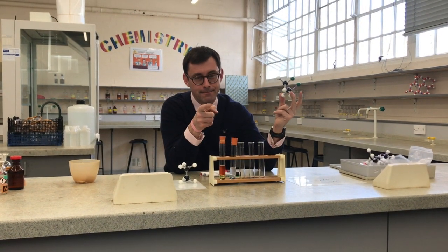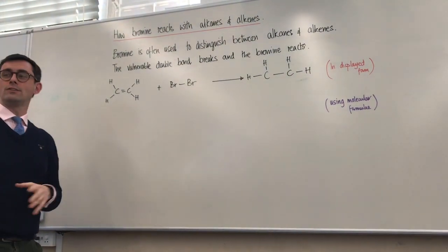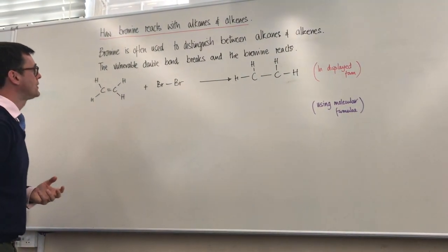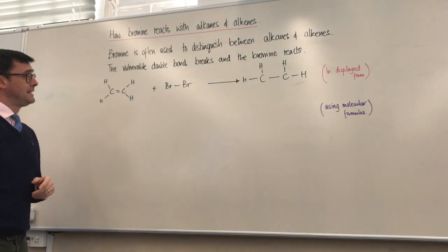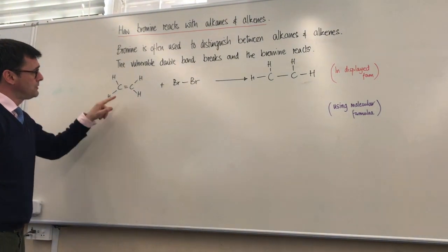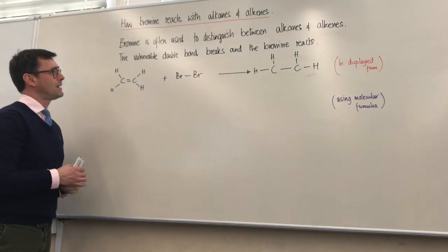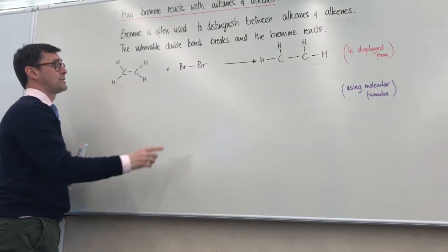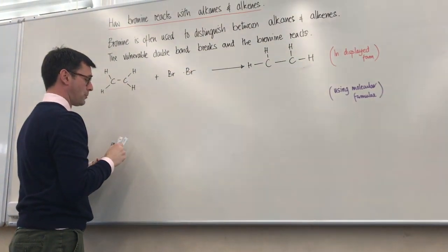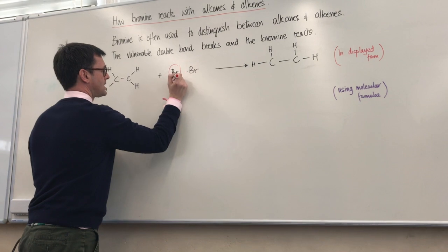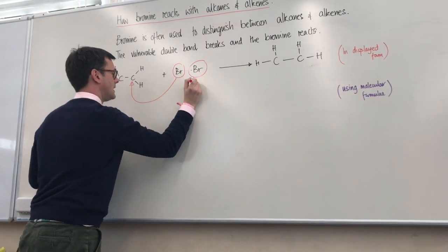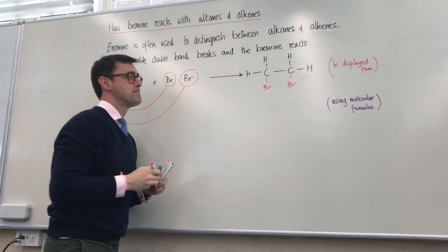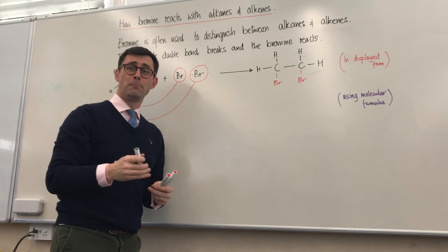We're making notes in our bubble books. The title is 'How bromine reacts with alkanes and alkenes.' Bromine is often used to distinguish between alkanes and alkenes, and that's due to the vulnerable double bond. The vulnerable double bond breaks, and this causes the bromine to react — the bromine bond also breaks, then one bromine attaches here and the other bromine attaches there.